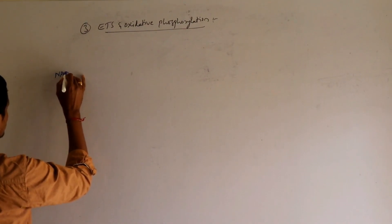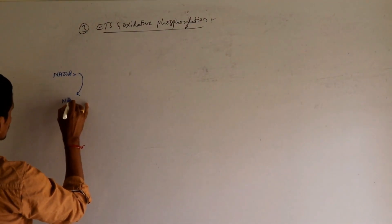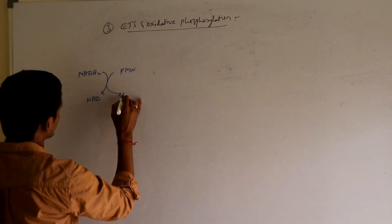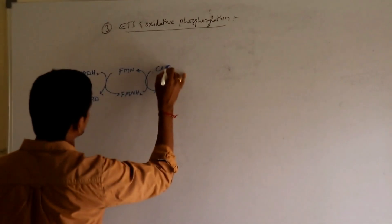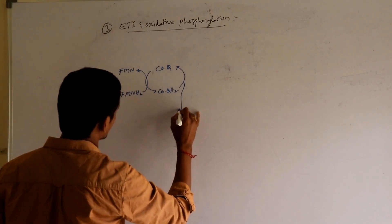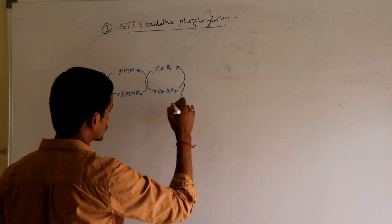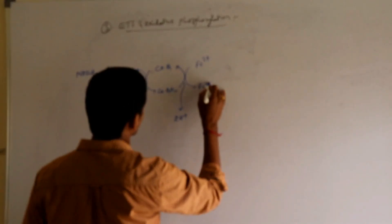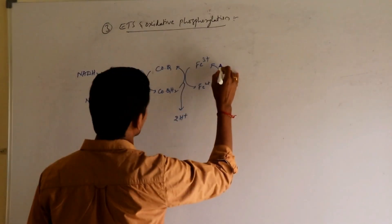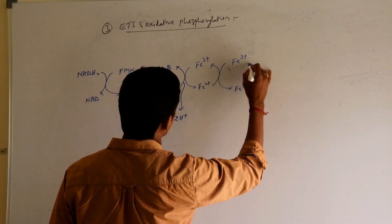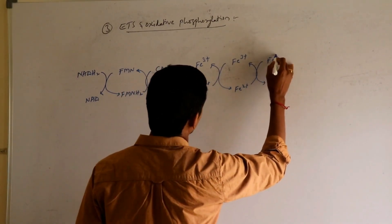Starting with NADH2 converting to NAD, then FMN converting to FMNH2, then coenzyme Q converting to coenzyme QH2. Here H2 is released outside but electrons are still being transported — Fe3+ converting to Fe2+. These are carried by several electron carriers.